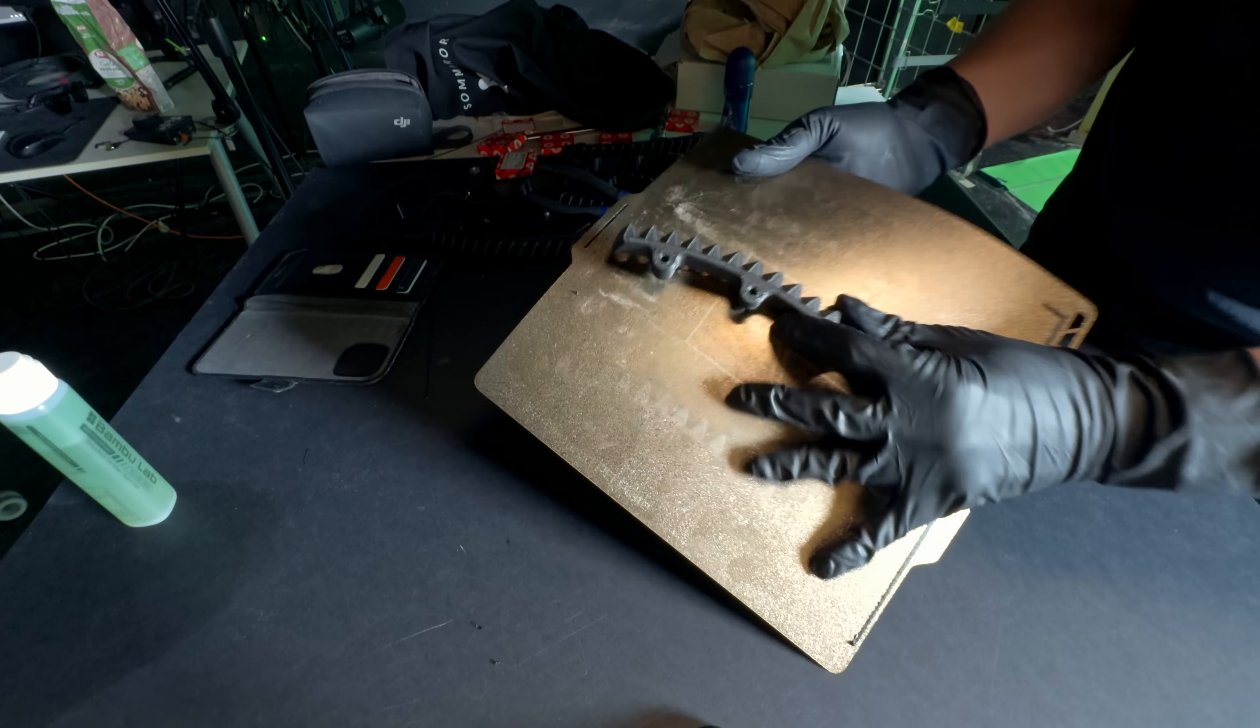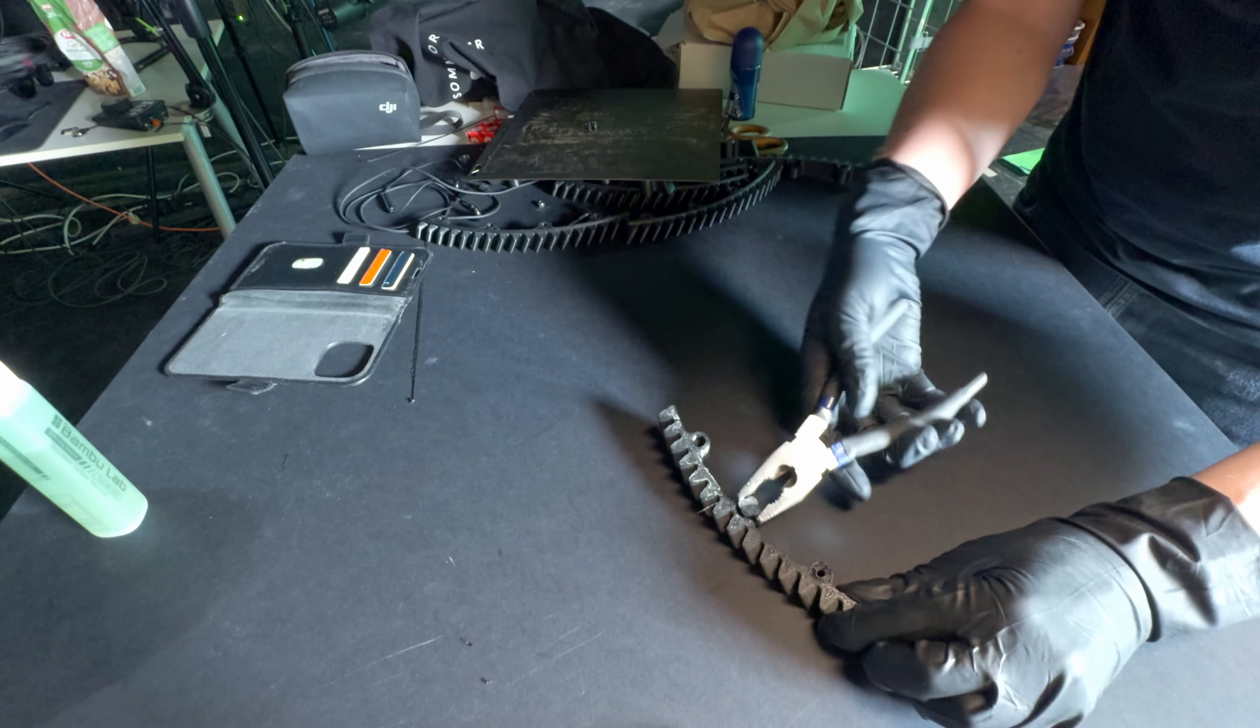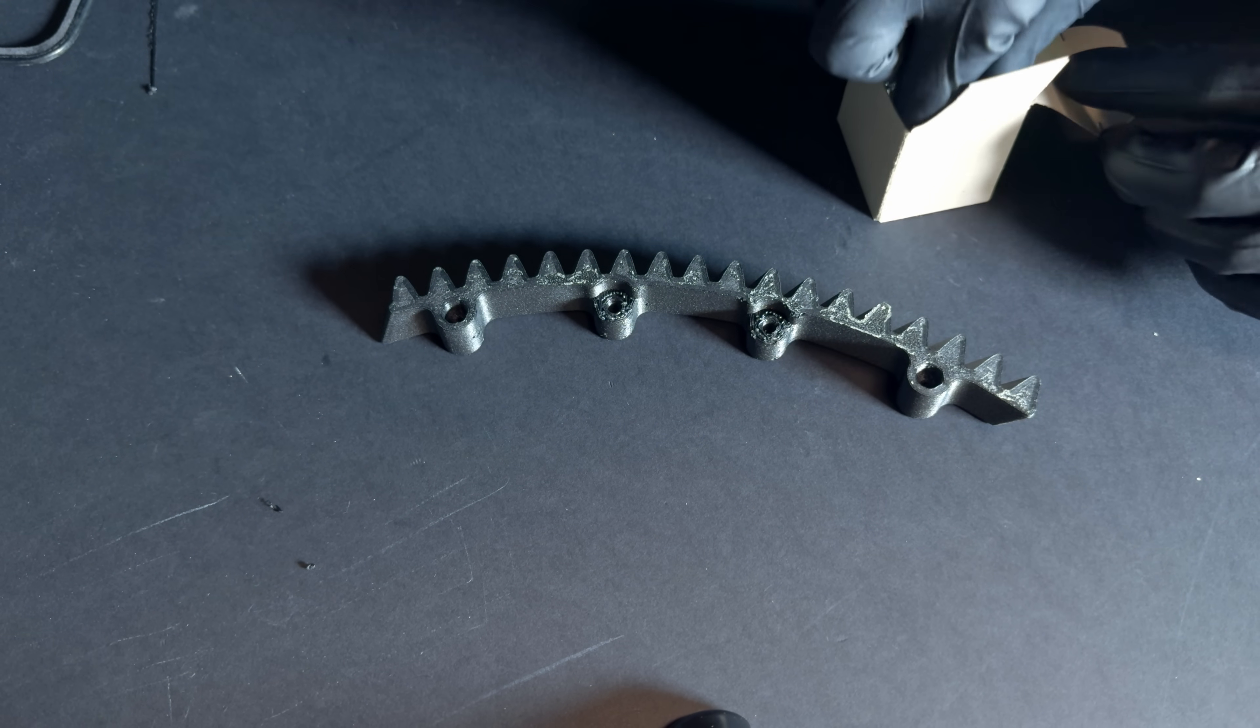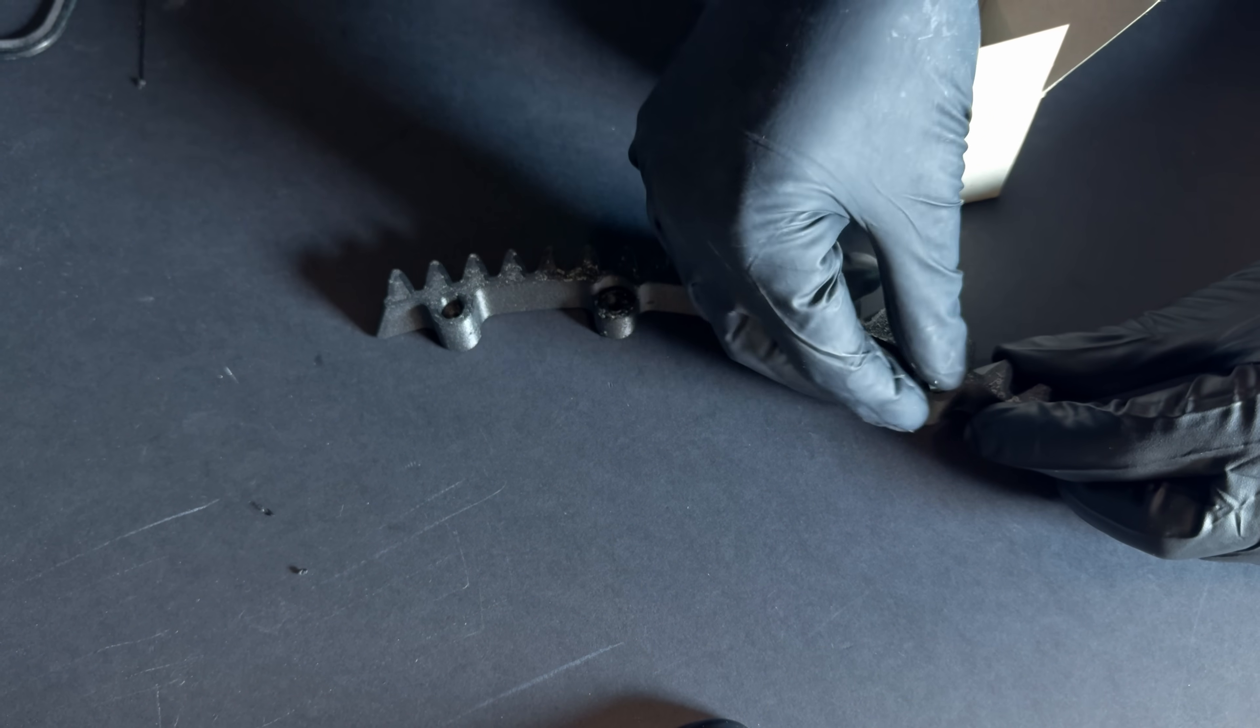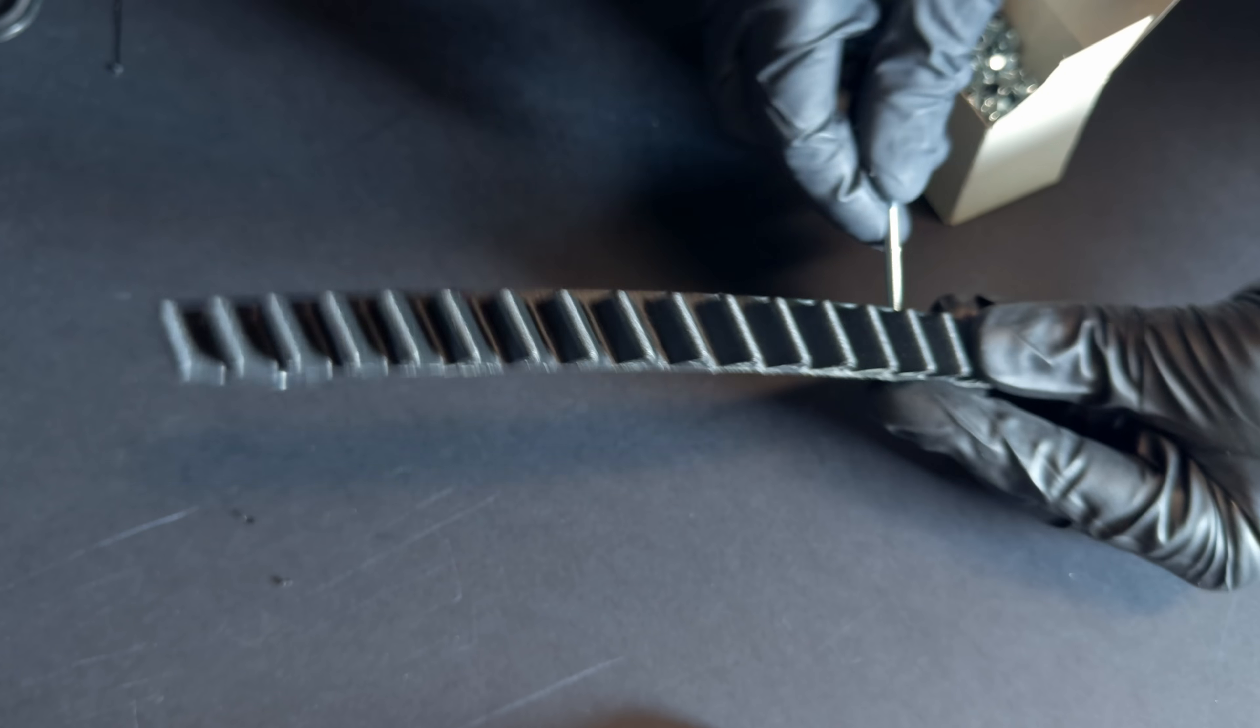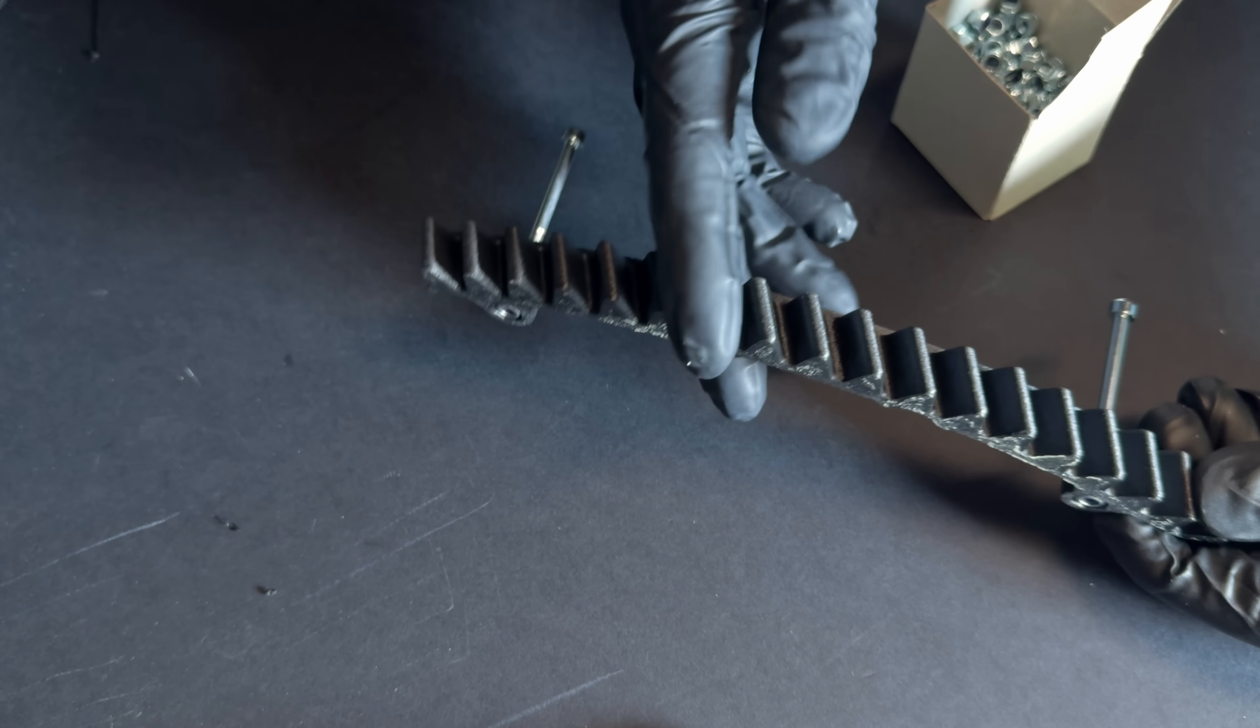The print is ready with probably the correct hexagons. So let's see if we can break this free. The support came off nicely. How did we do on these hex nut captures? Yeah, good. So this print turned out perfect. Now I need six copies of this.